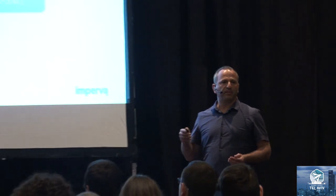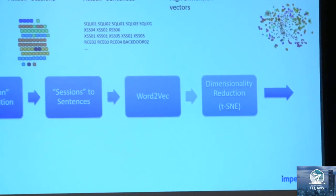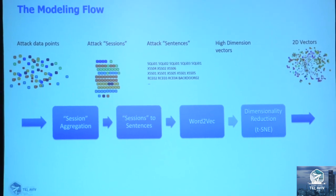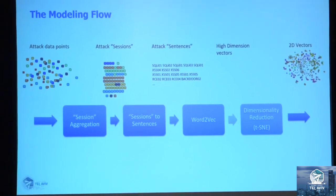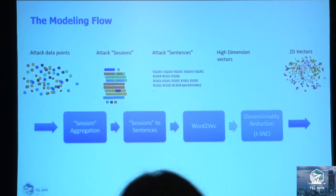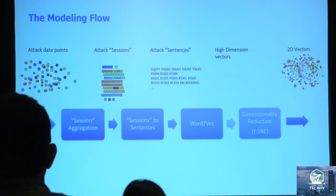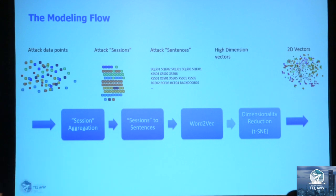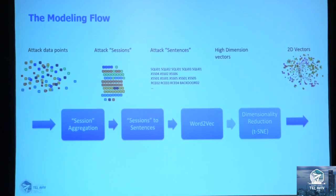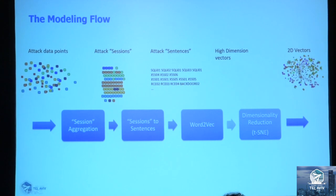Here is the zoom-out of the processing flow. We start with tagged data points, which have different types represented by colors. We aggregate the tags into sessions, which Ori will elaborate on. We then convert the sessions from the attack arena to the language arena — converting them into sentences. Then we activate the Word2Vec algorithm to do the embedding. Word2Vec can generate vectors of different sizes; we use 30 dimensions. To visualize all these vectors together, we used a dimensionality reduction algorithm called TSNE to project them into a two-dimensional subspace.